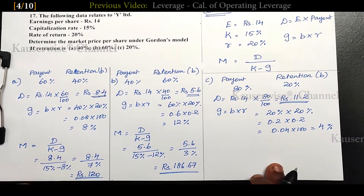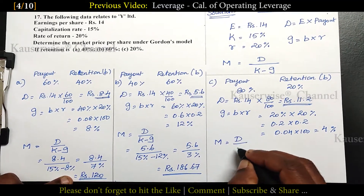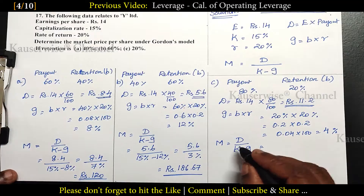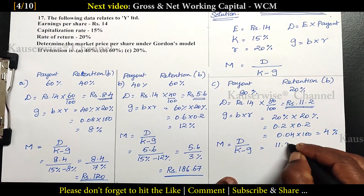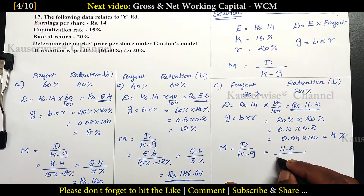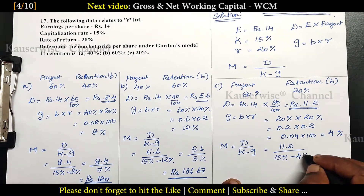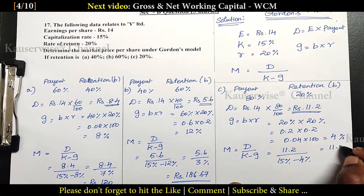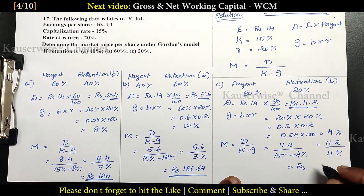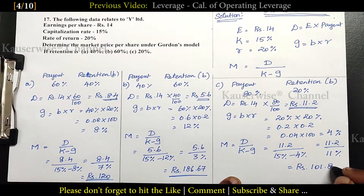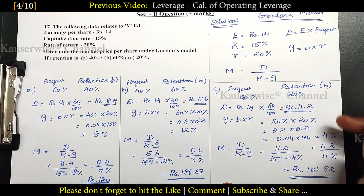For Case 3: Market price per share = D / (K − G) = 11.2 / (15% − 4%) = 11.2 / 11% = ₹101.82. This is the market price per share according to the third case.